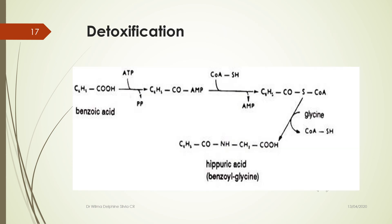Hippuric acid (benzoylglycine) is obtained by conjugation of glycine with benzoic acid. Benzoic acid is used as a food preservative, and glycine is used for its detoxification. This conjugation reaction takes place in the liver and can therefore be used as an index of liver function.